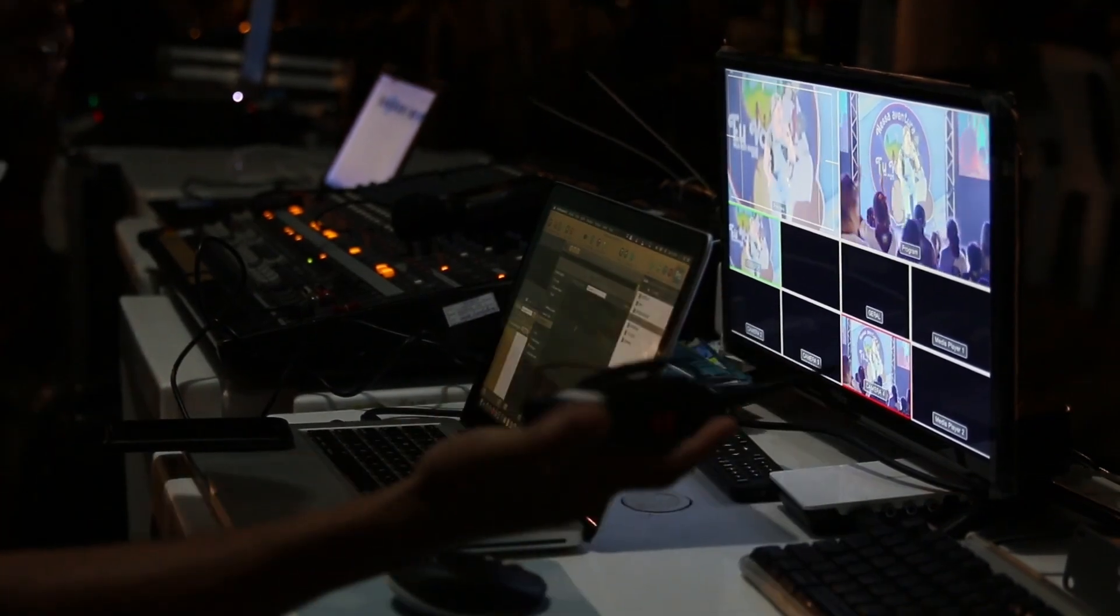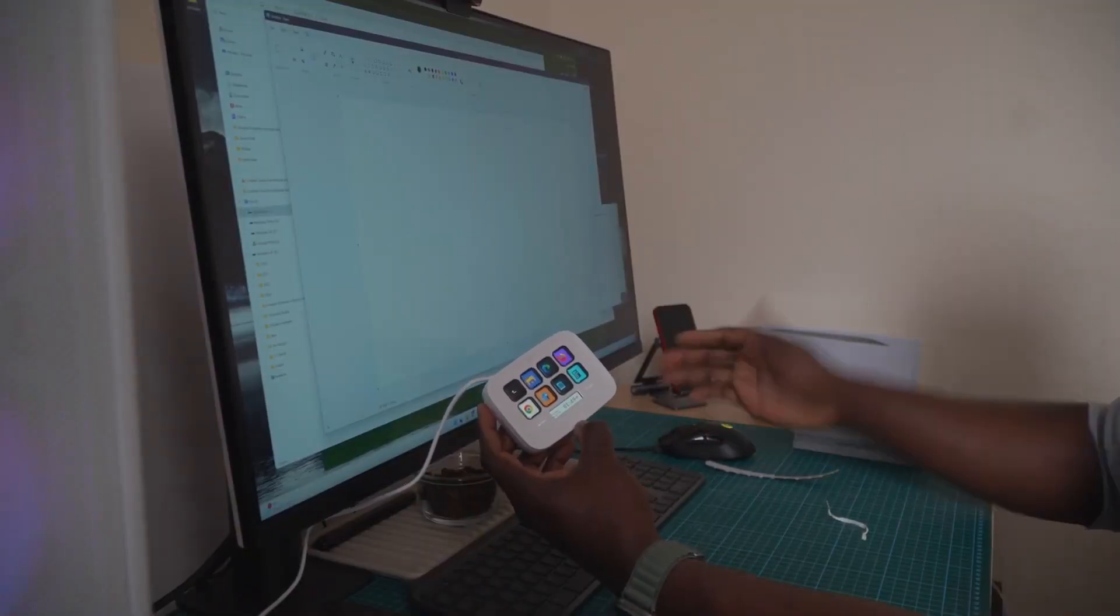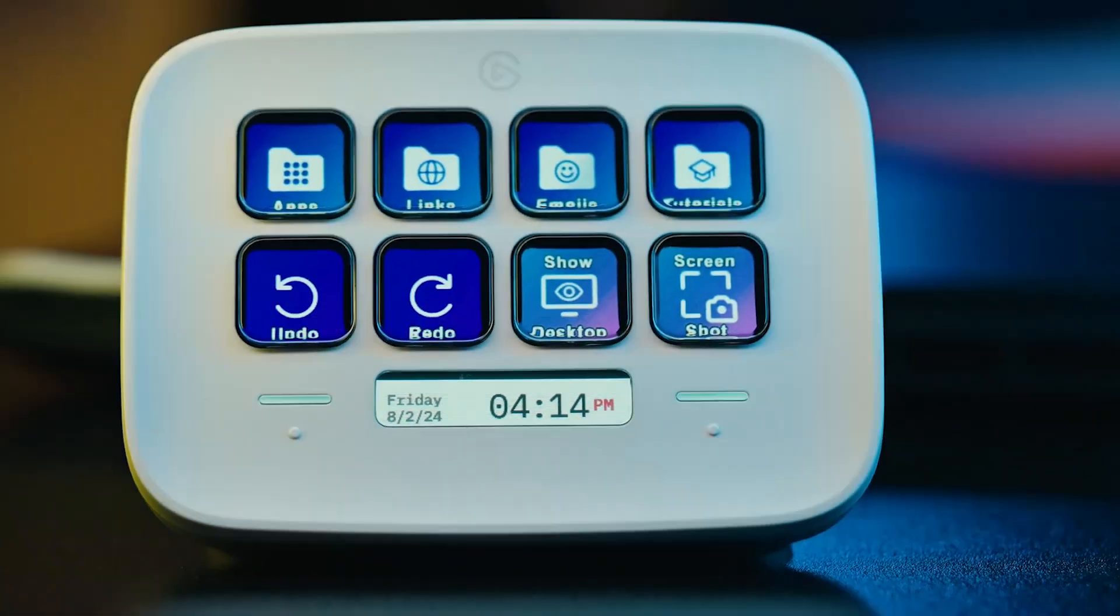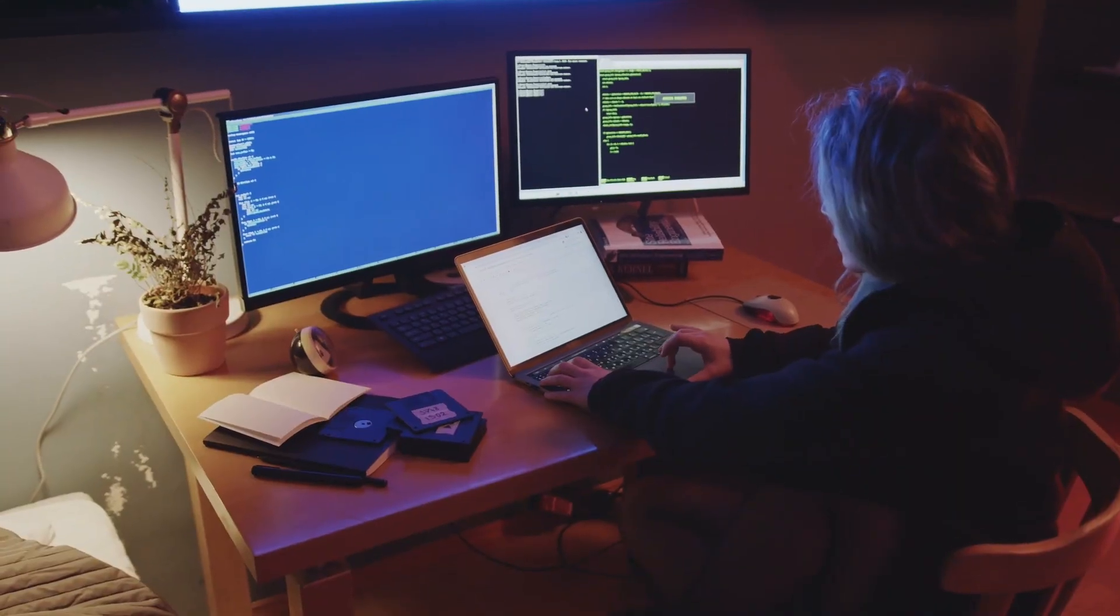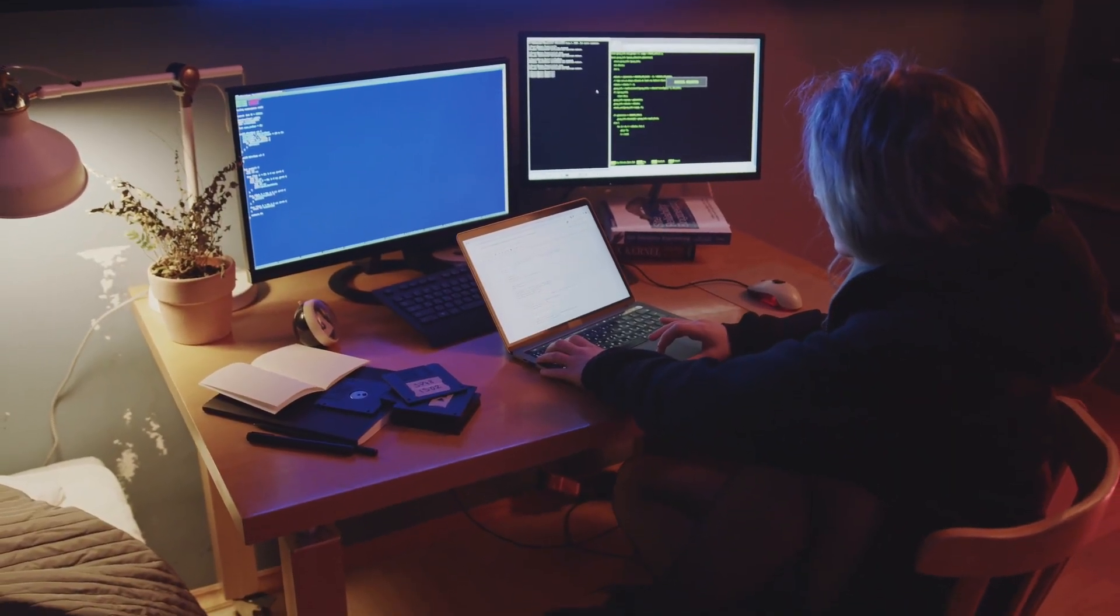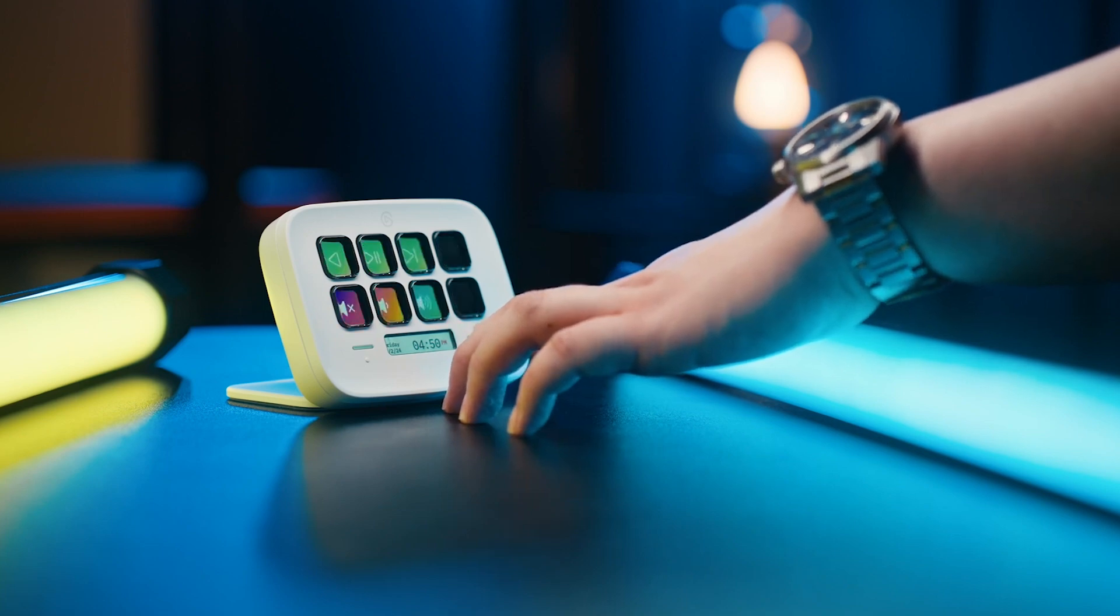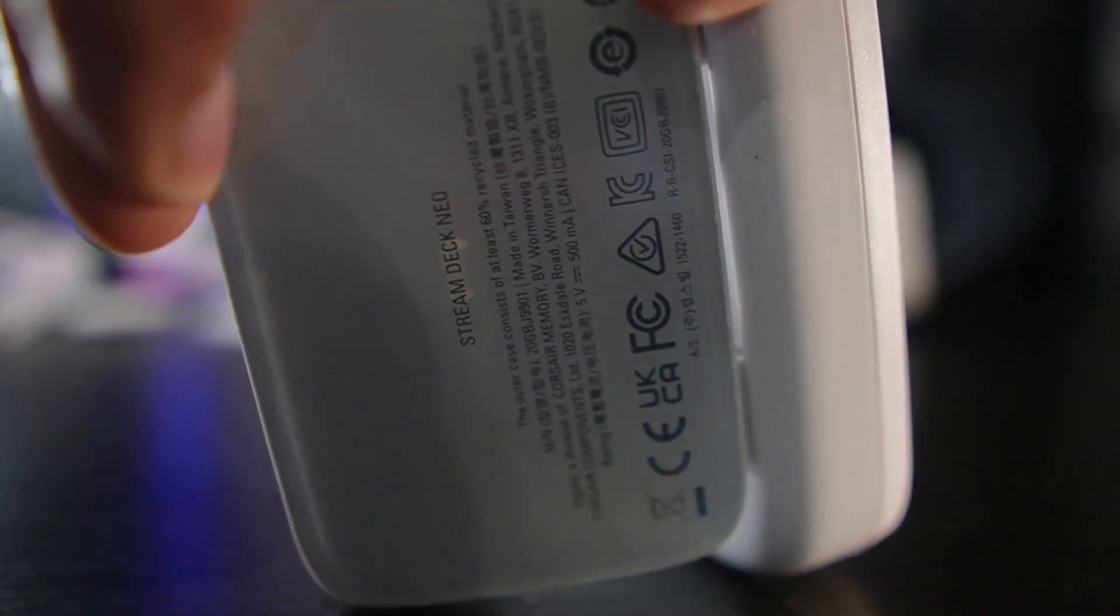Let's talk about design. The Elgato Stream Deck Neo sports a sleek and modern look that feels right at home on any desk setup. It's got a more compact form factor compared to its predecessors, making it easier to fit into even the most crowded spaces. The buttons are tactile, responsive, and give you that satisfying click every time you press one. I believe the build quality here is top-notch, with a sturdy feel that gives you confidence in its durability.